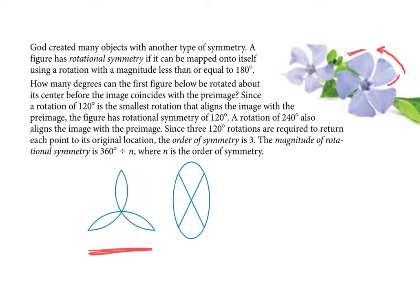This example actually has both line symmetry and rotational symmetry. It has three lines of symmetry. For rotational, how many times can you rotate it before you're back on top of yourself? You could rotate from here to there — that's one; from there to there — two; and back — three. You can tell right away because there are three identical pieces.